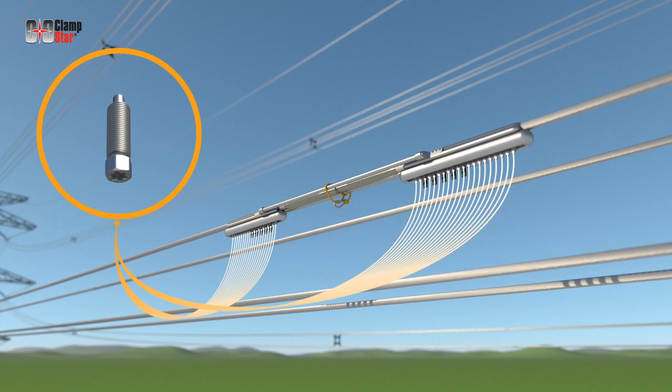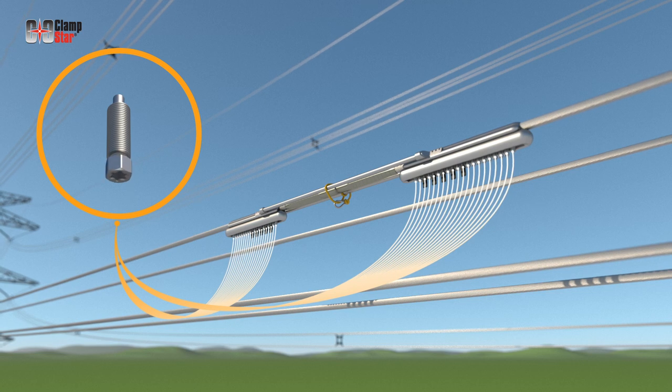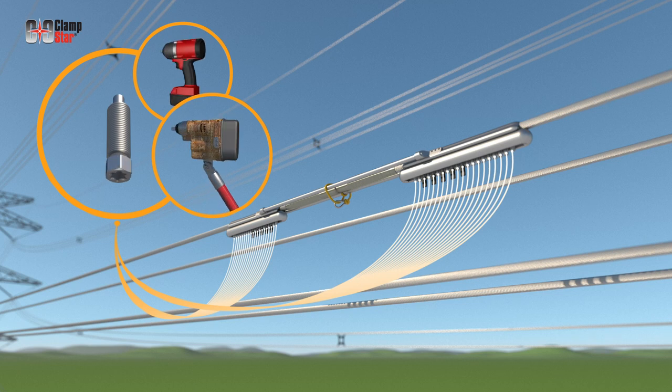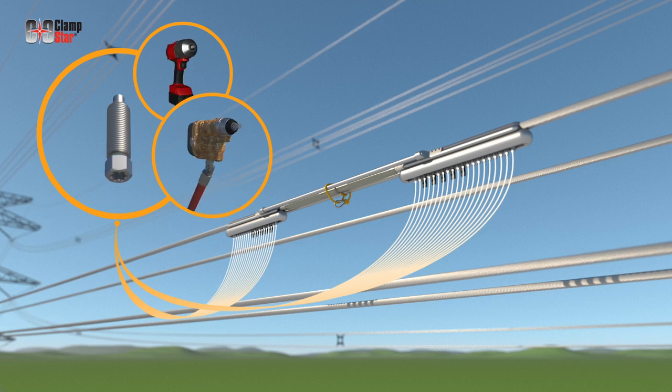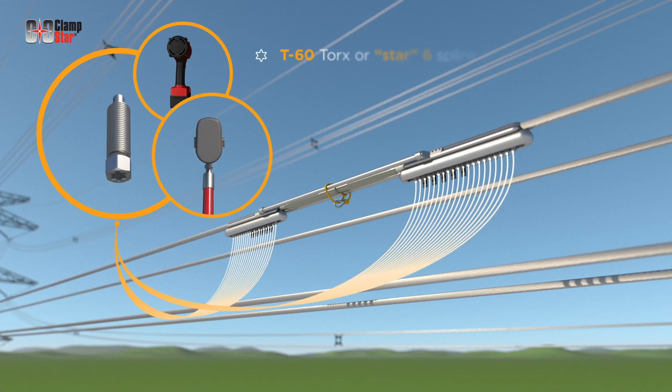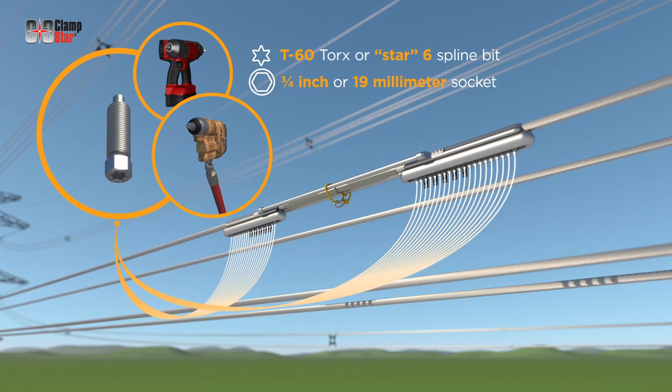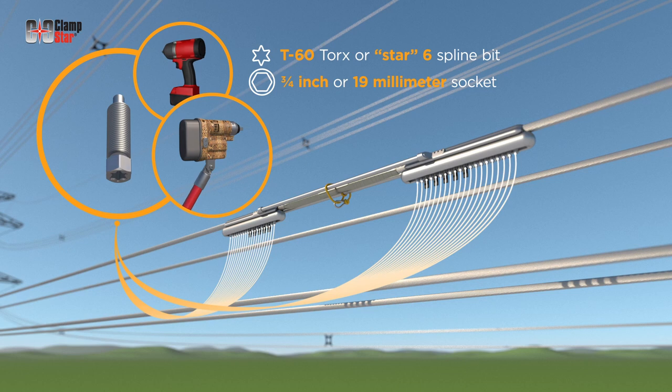To reduce installer fatigue and save substantial time, the use of power drivers such as rattle guns or remote controlled snake guns are recommended. The fasteners may be tightened with either a T-60 Torx or six spline star bit, or a three-quarter inch or 19 millimeter socket.